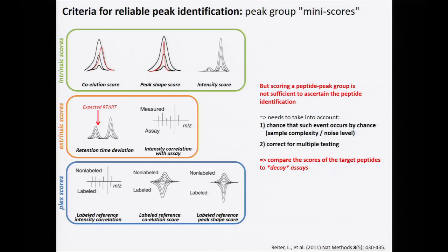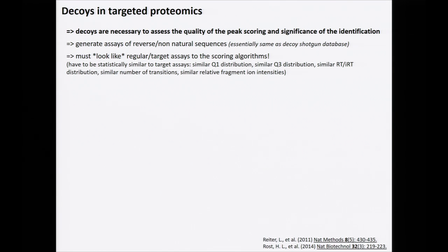We use a similar strategy as in shotgun proteomics: we compare the scores of target peptides to scores of decoy peptides. The concept is similar, but the implications are very different. In targeted proteomics, the idea of decoys is to assess the quality of peak scoring and the significance of identifications. For this, we generate assays of reverse or non-natural sequences that are expected not to exist in your sample background — essentially the same as target-decoy database searching in shotgun identification.